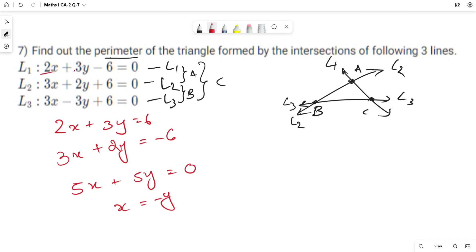Putting x equals minus y in L1, we get 2 times minus y plus 3y equals 6. This gives y equals 6, so x equals minus 6. Point A is (minus 6, 6).